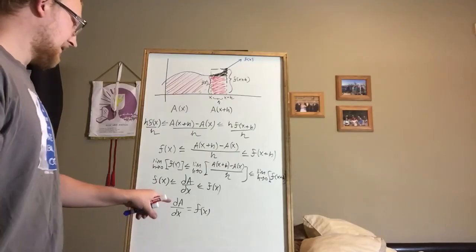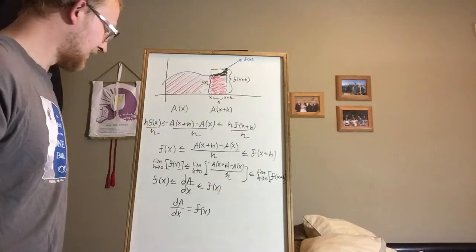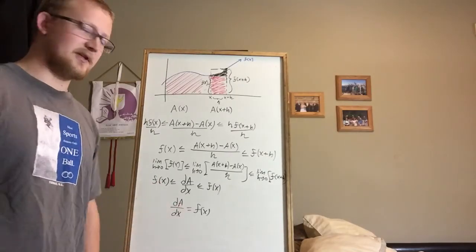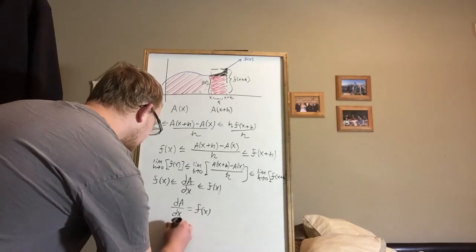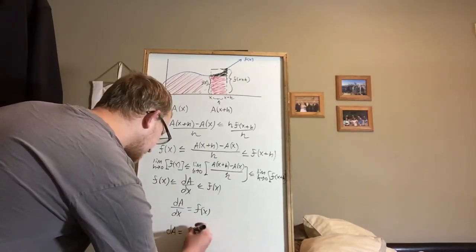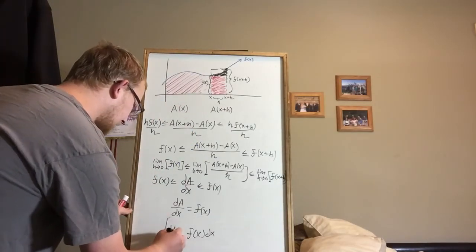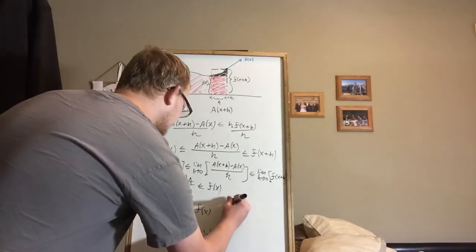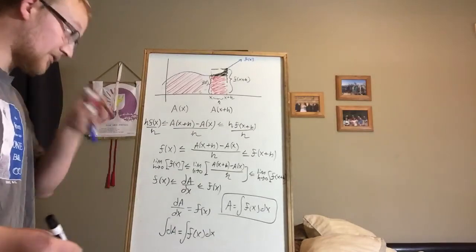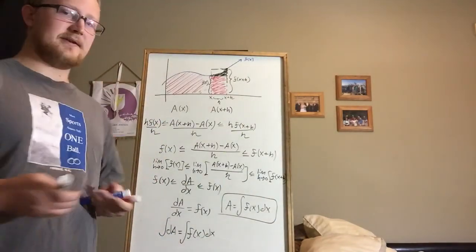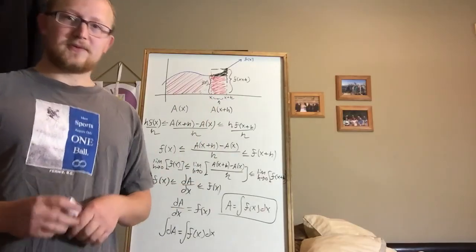What we've proved is that the derivative of the area function with respect to x is equal to the original function. The area function is the integral, which means the derivative of the integral with respect to x equals f(x). If we move the dx over, we can also write this in integral form: area equals the integral of f(x) dx. This proves that derivatives and integrals are inverse operators — one finds slope, one finds area. I hope this was helpful, and I'll see you next video.